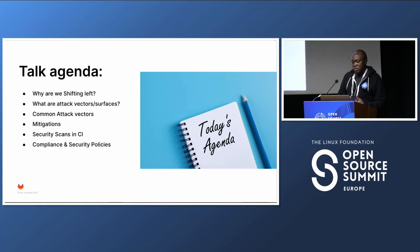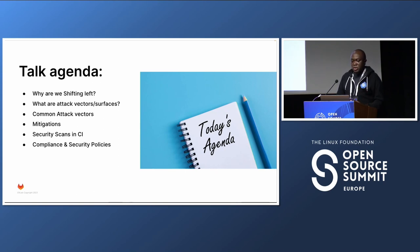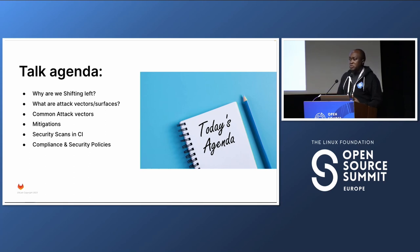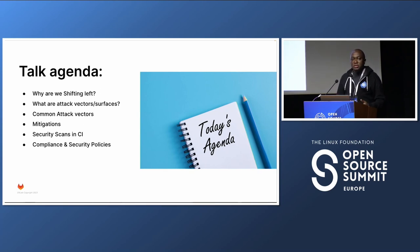The list of things I'm talking about today: why are we even shifting left in the first place? What are attack vectors and surfaces? Common attack vectors that we see? How do we mitigate them? Security scans we can use in CI to mitigate these attack vectors? And compliance and security policies, since those are key concerns especially in regulated industries.